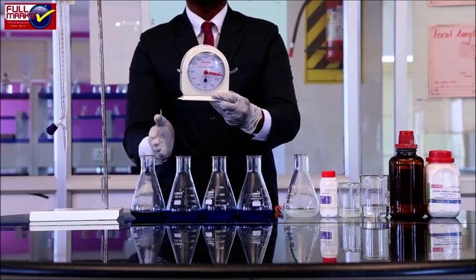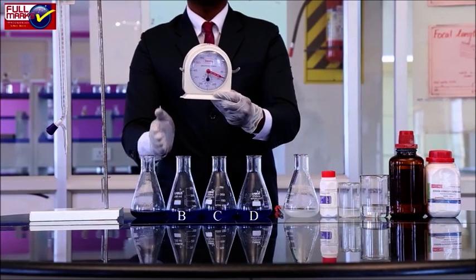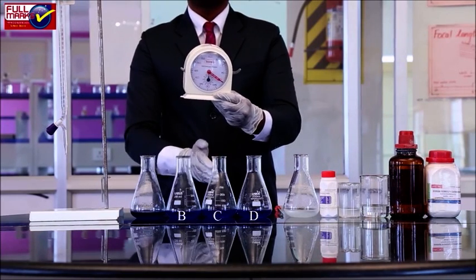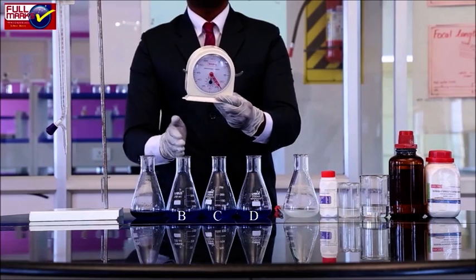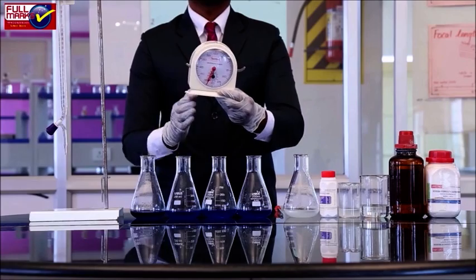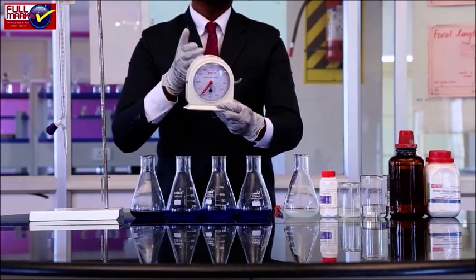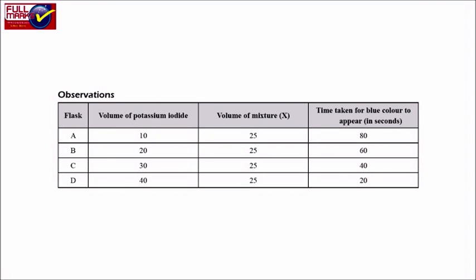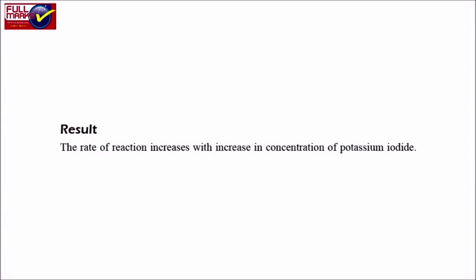Repeat the above step with the solutions of flask B, C, and D separately, by using 25 ml of the solution of each flask and 25 ml of solution from flask X. Result: The rate of reaction increases with increase in concentration of potassium iodide.